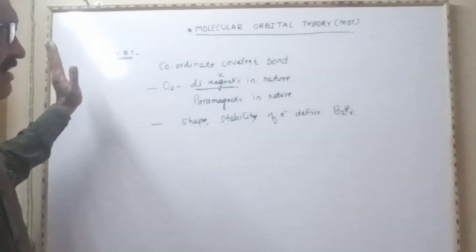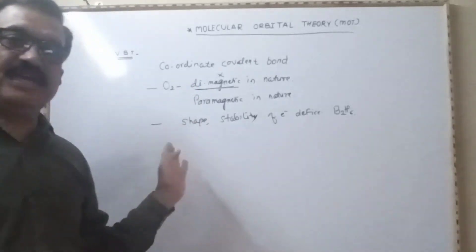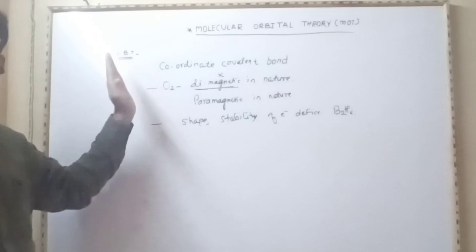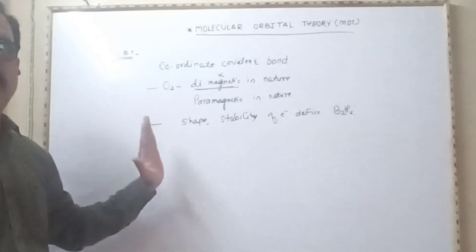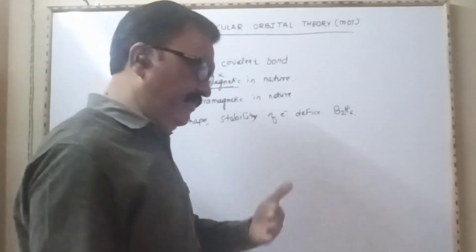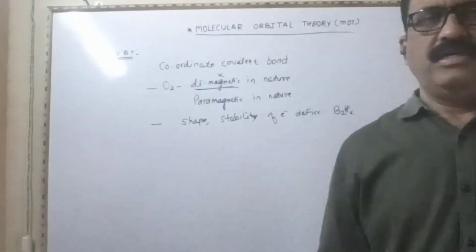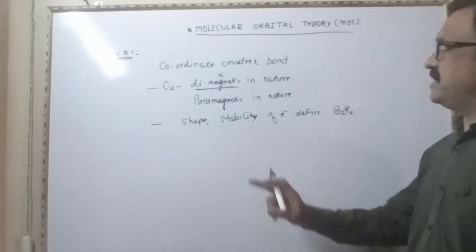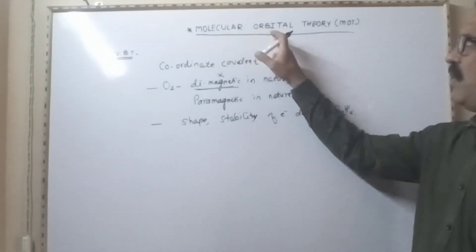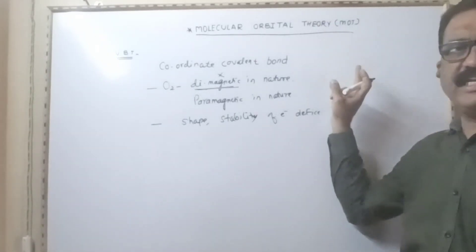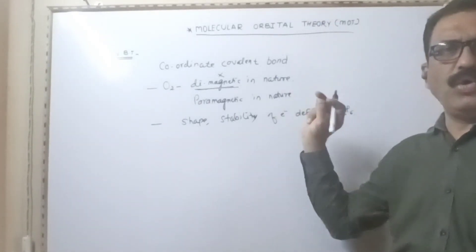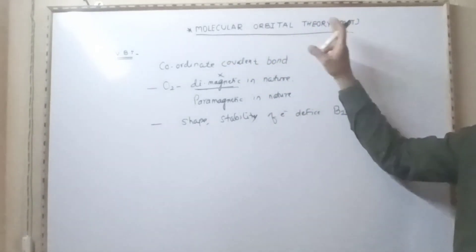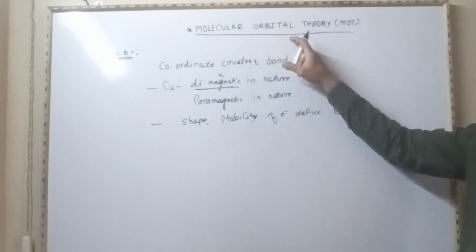Valence Bond Theory explains a few concepts in various ways, but these are the major limitations or drawbacks of Valence Bond Theory. And hence, to overcome these drawbacks, a new theory was proposed called Molecular Orbital Theory, represented by MOT — where M stands for Molecular, O means Orbital, and T means Theory.